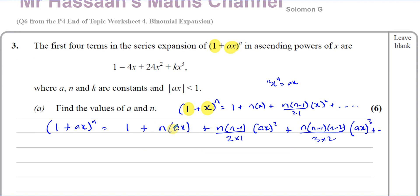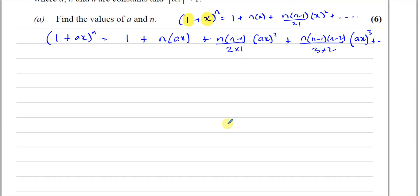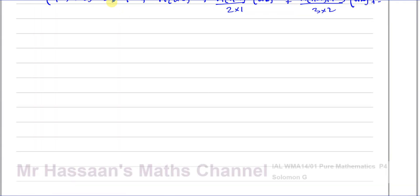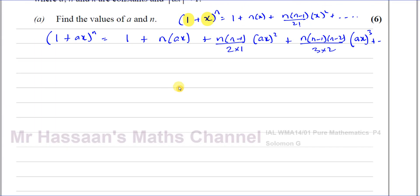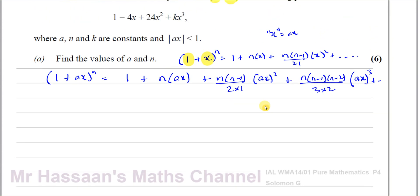Comparing the coefficients of x in what we have to show: the x coefficient in the given expansion is −4, and the x coefficient in our formula expansion is going to be n times a.